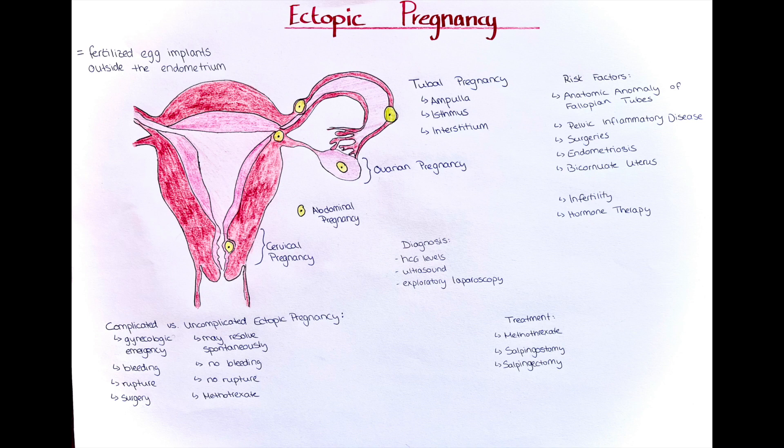An ectopic pregnancy is by definition a pregnancy in which the fertilized egg attaches in a location other than the endometrium. Implantation of the fertilized egg occurs usually five to six days after fertilization and is usually in the superior or lateral wall of the endometrium.